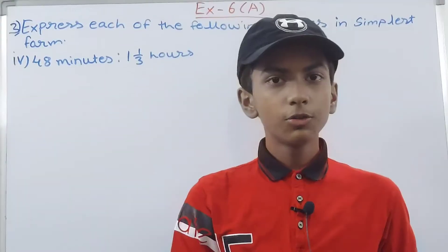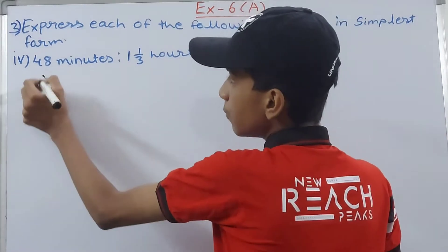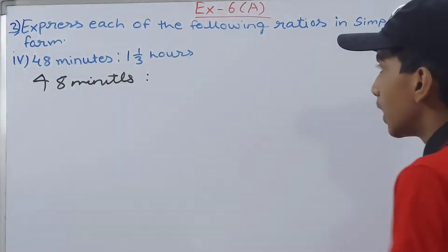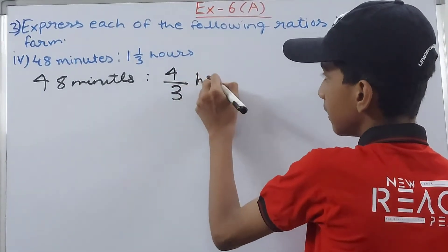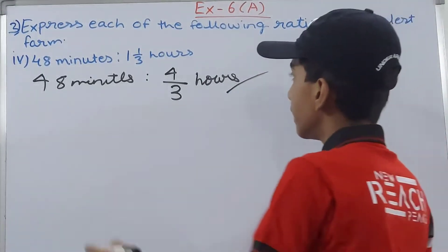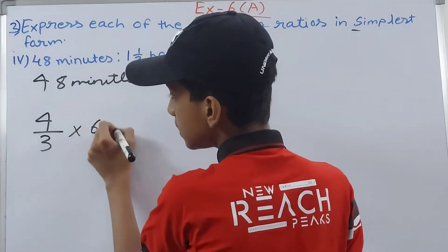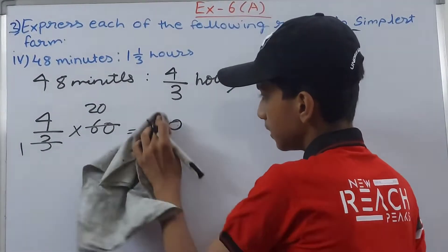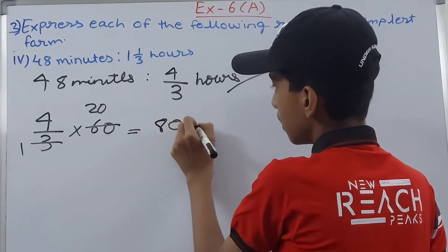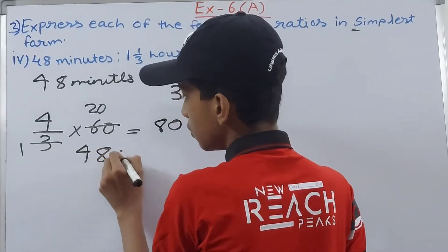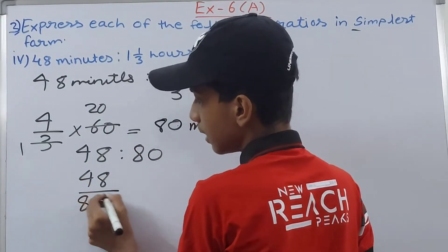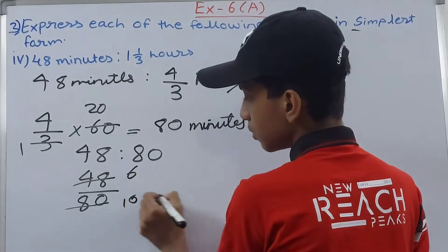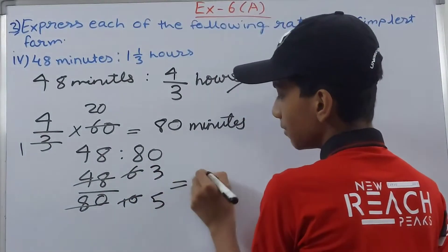This one is 48 minutes is to 1 whole 1 upon 3 hours. So 48 minutes is to 1⅓ hours, which becomes 4 upon 3 hours. Convert hours to minutes by multiplying by 60. We will have 4 upon 3 into 60, which is 80 minutes. Now our ratio becomes 48 is to 80. Simplify: 48 upon 80 by 8 gives us 6 and 10, then 3 and 5. So we'll have 3 is to 5.